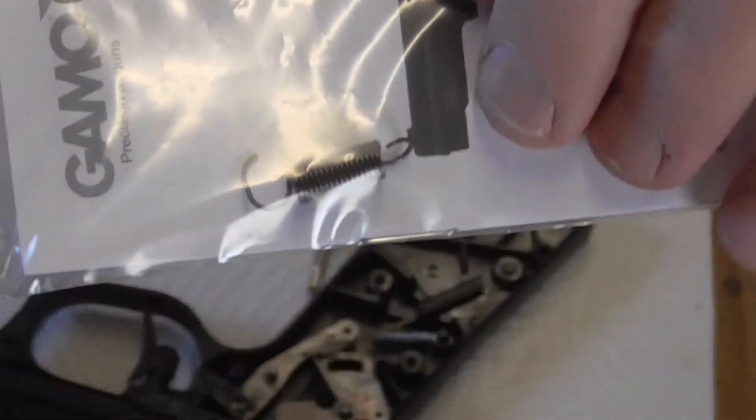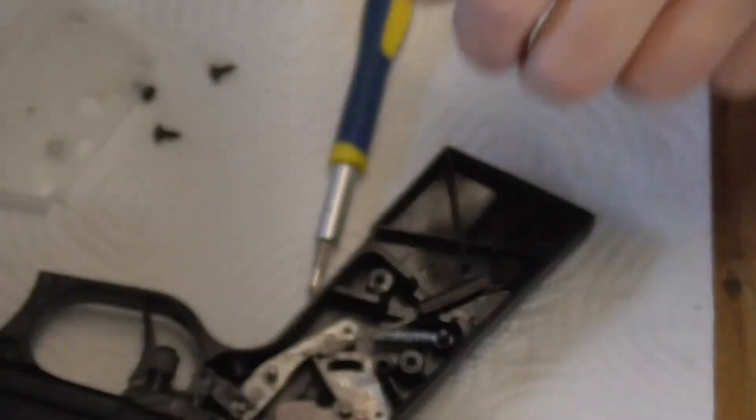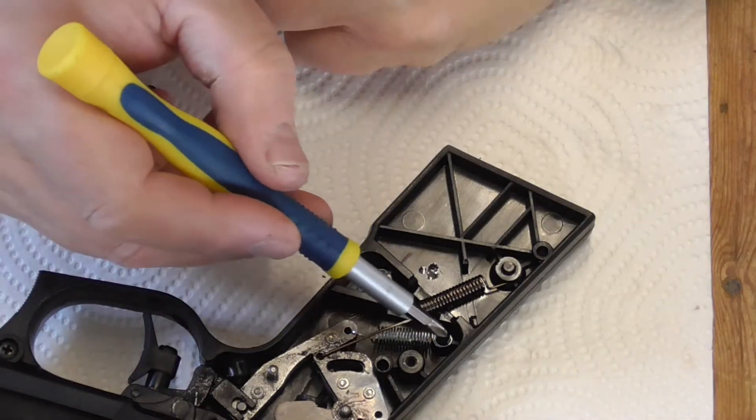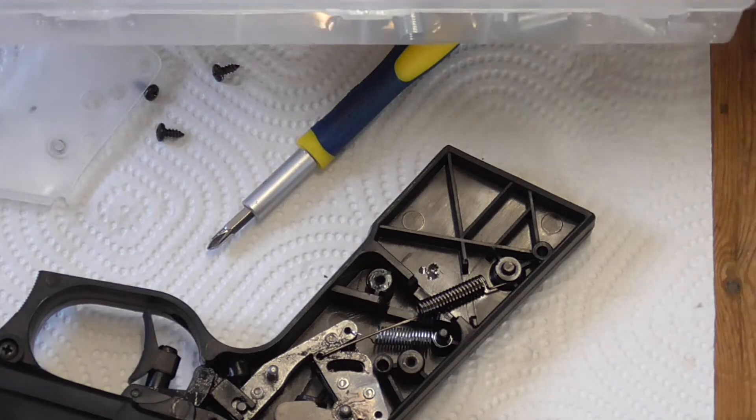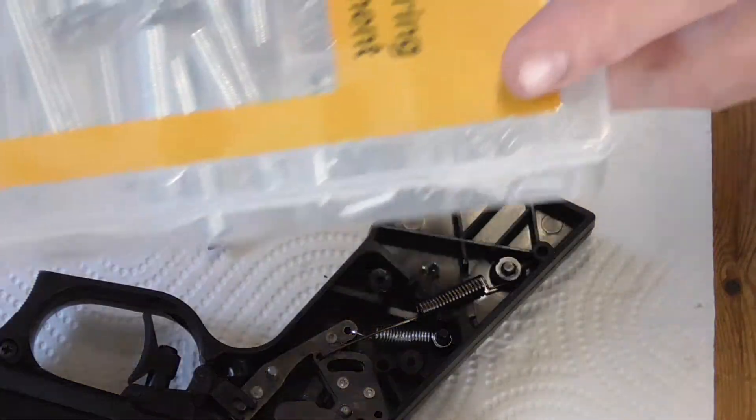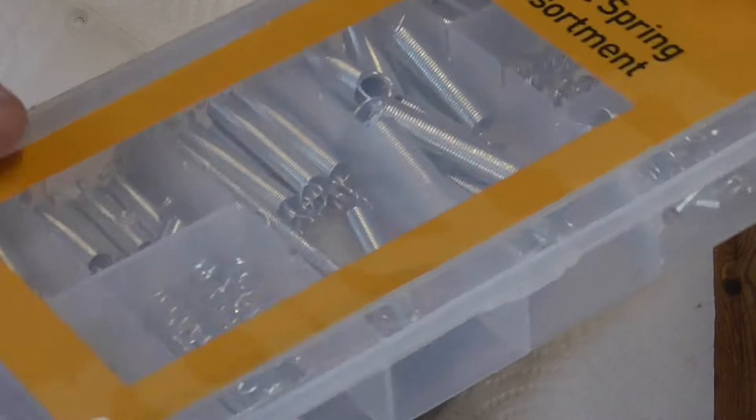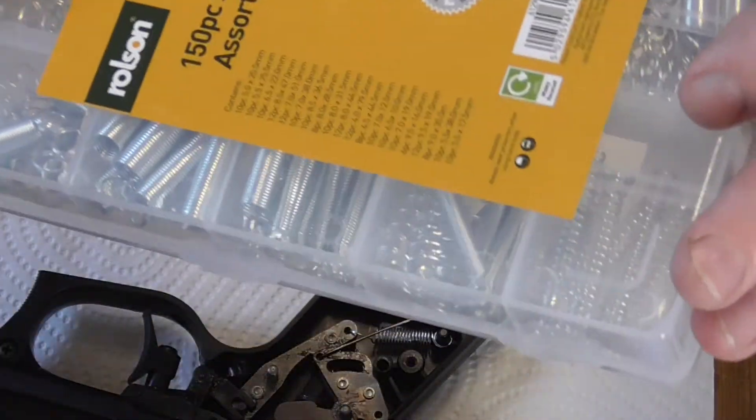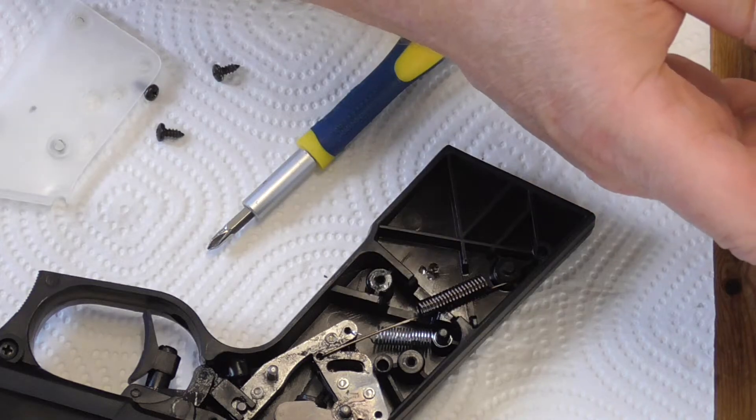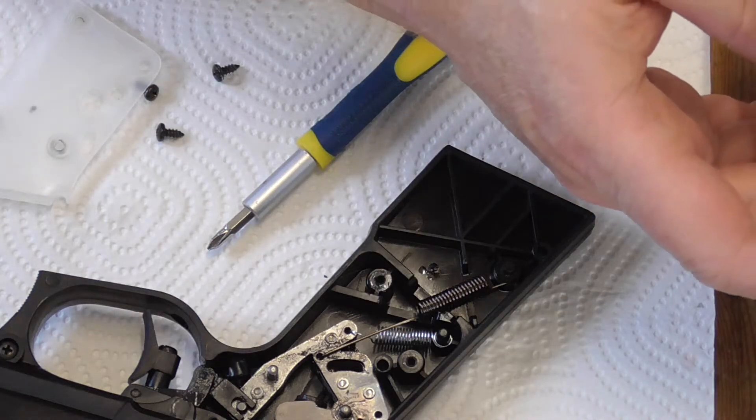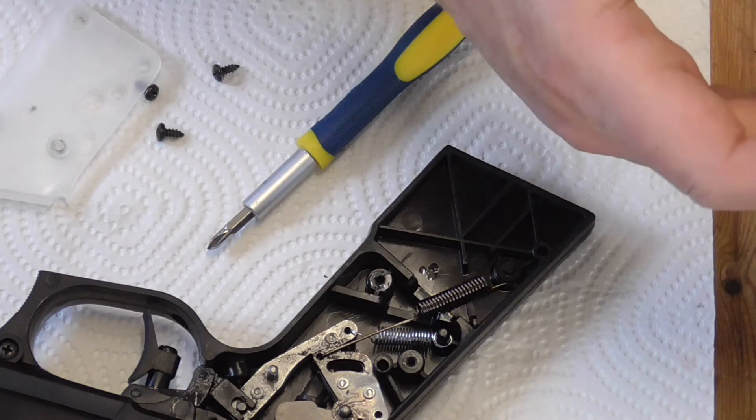The original spring was this one here. That hooks in the actual sear, and the other end goes over this pin. I just wanted to reduce it by about roughly half, maybe just over half. So I bought these set springs off Amazon, and I used the smallest one. It measures up to 5mm diameter, overall diameter, and an overall length of 20.5mm.